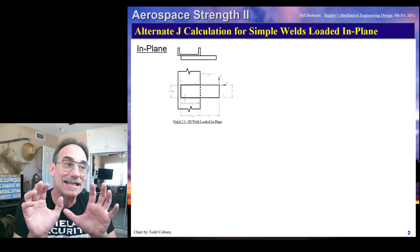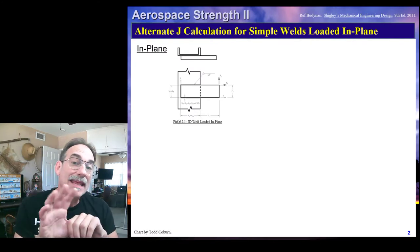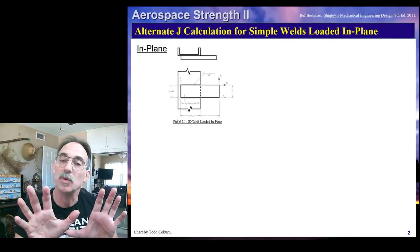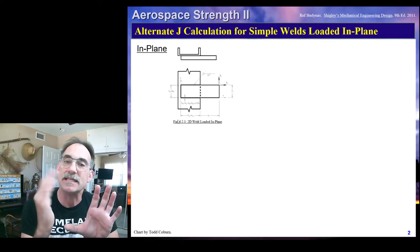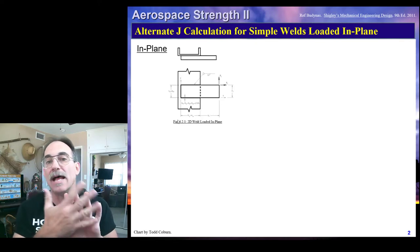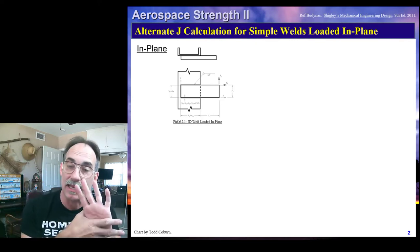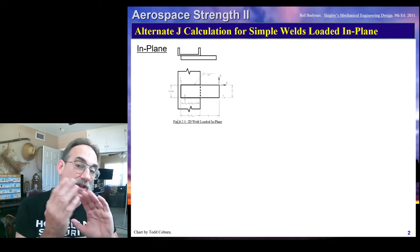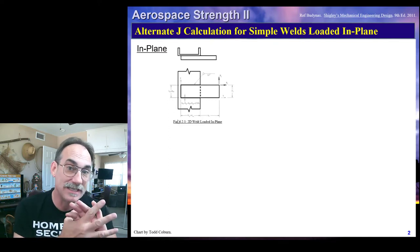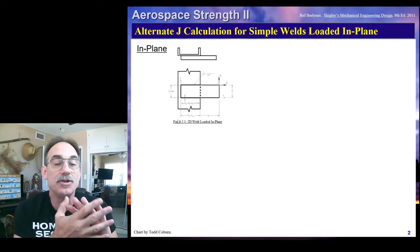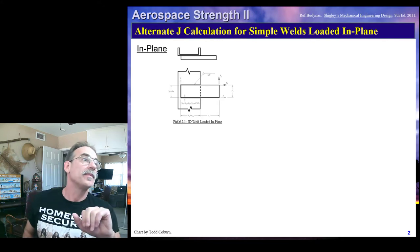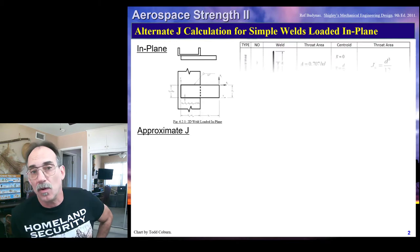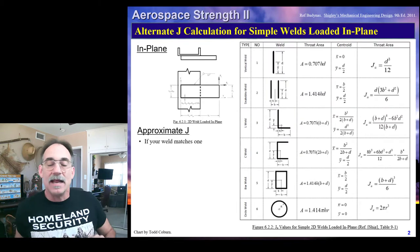Think back to last lecture when we talked about in-plane and out-of-plane welds. An in-plane weld was one where the loading is such that all components of stress lie in the same plane. When that's the case, we will use the J, or the torsional resistance of that weld to the loading. This here is a little sketch of a typical in-plane weld.